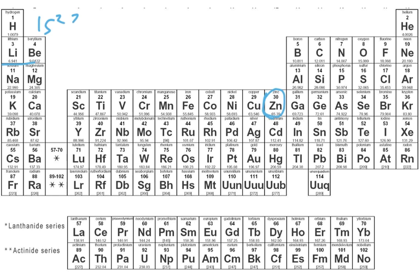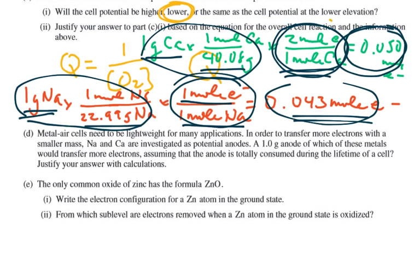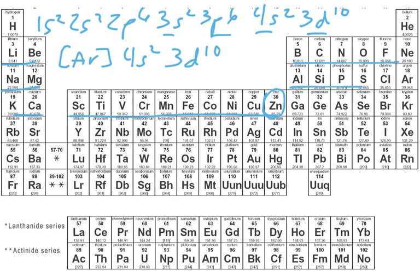Now students could write that way, they could say 3s2, 3p6, 3d10, 4s2, that would be fine. Or they could do the shortcut version where they say argon, 4s2, 3d10. Any of those would have been appropriate. Then it says, from which sublevel are electrons removed when a zinc atom is oxidized? So when the atom becomes an ion, then we are going to lose the outermost electrons first, so we're going to lose it from the 4s rather than from the 3d. And that's this whole question.